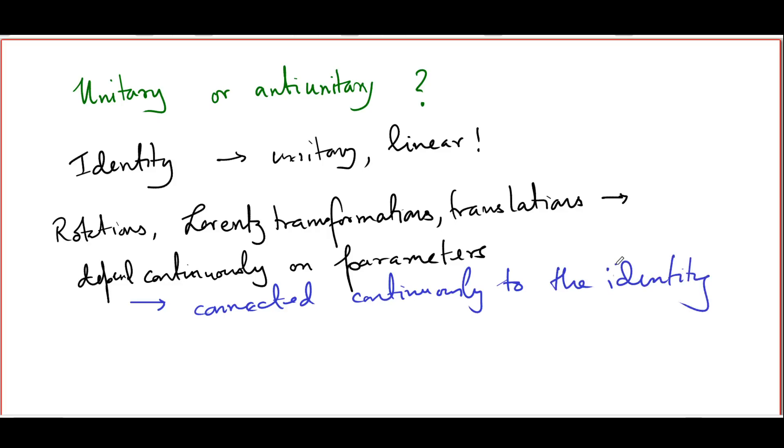And this implies that such transformations have to be implemented by unitary operators. After all, you start with the identity operator which is unitary and as you keep on tuning the parameters, you don't expect the continuously changing operator suddenly becoming anti-unitary. So in all such situations, you are going to have unitary transformations. Discrete symmetry transformations can be represented sometimes by anti-unitary operators. But as we will see, this is usually the case only when there is a reversal of time involved in the symmetry operation. The time reversal symmetry, the typical mathematical apparatus for that involves anti-unitary operators. And that is about it. In all other symmetry transformations, we actually deal with unitary operators.